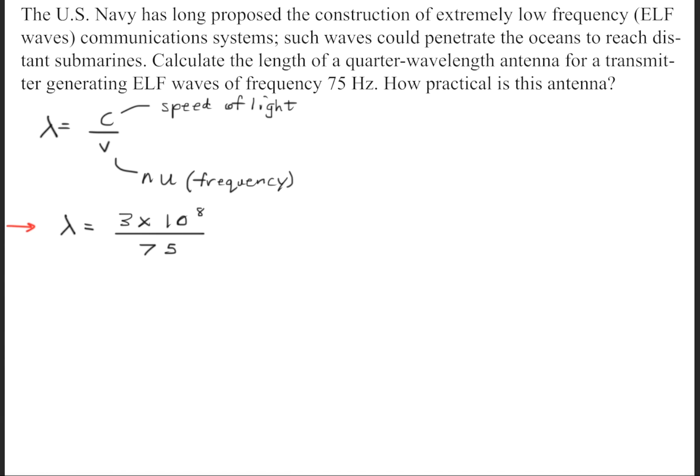So we'll solve for the wavelength. The wavelength equals the speed of light in a vacuum, which is 3 times 10 to the 8 meters per second, and we were given 75 hertz. So we'll get a wavelength of 4 million meters.